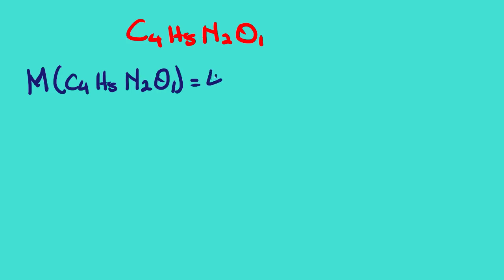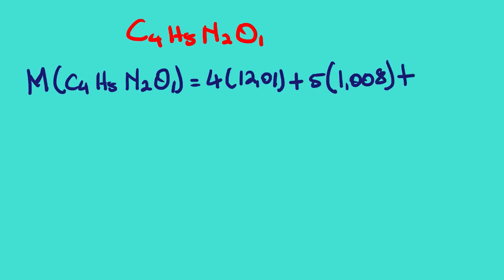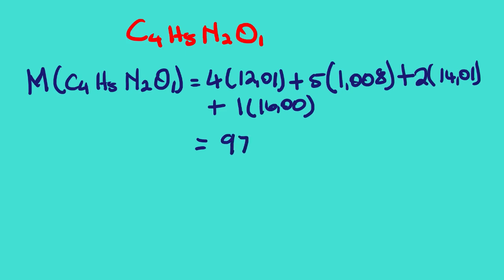Now we calculate the molar mass of the empirical formula C₄H₅N₂O: 4 × 12.01 plus 5 × 1.008 plus 2 × 14.01 plus 1 × 16.00, which gives us 97.01 grams per mole. This is the molar mass of the empirical formula.